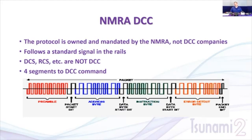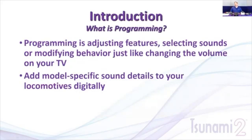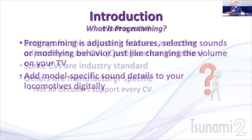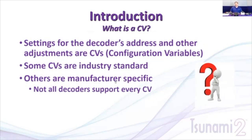The third part is the information — what tells the decoder what to do, such as 'locomotive 1000, move forward, speed step 10, turn on F0, turn on F4.' The last part is the error detection or end of transmission. Once the decoder receives all four parts, it performs the task, and the DCC system continues to repeat this. This is important because we'll be talking about programming and CV adjustments on the mainline. Now, 'programming' is one of the biggest misnomers in DCC — you're not actually programming the decoder, you're making adjustments based on what our engineers have programmed into it.